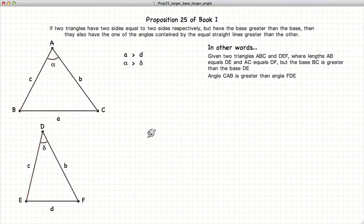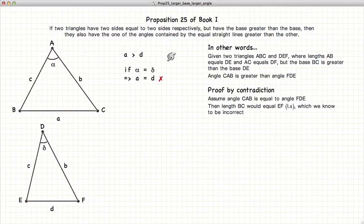We are going to demonstrate this by means of contradictions. So starting with the statement that a is greater than d, let's assume that alpha is equal to delta.